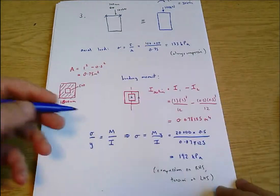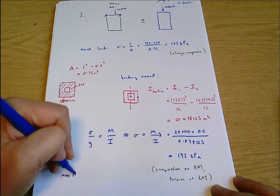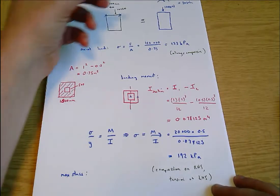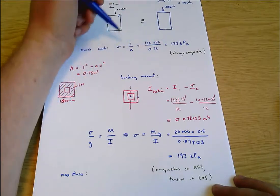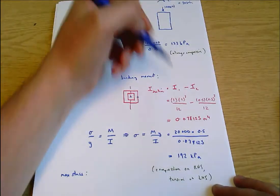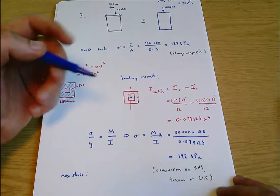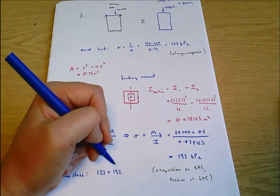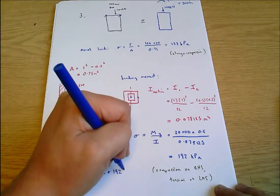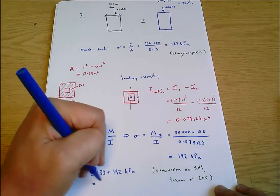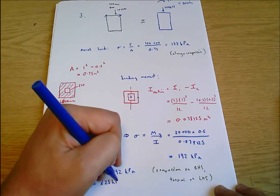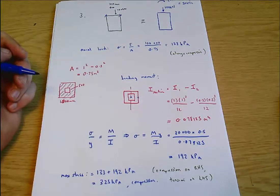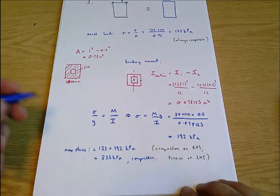So the maximum stress occurs in compression, and that is when the compression due to - it's here, it's on the right hand side - it's when the axial load and the bending moment both cause compression. And it's 133 plus 192 kPa, which is 325 kPa. Compression plus compression equals compression.